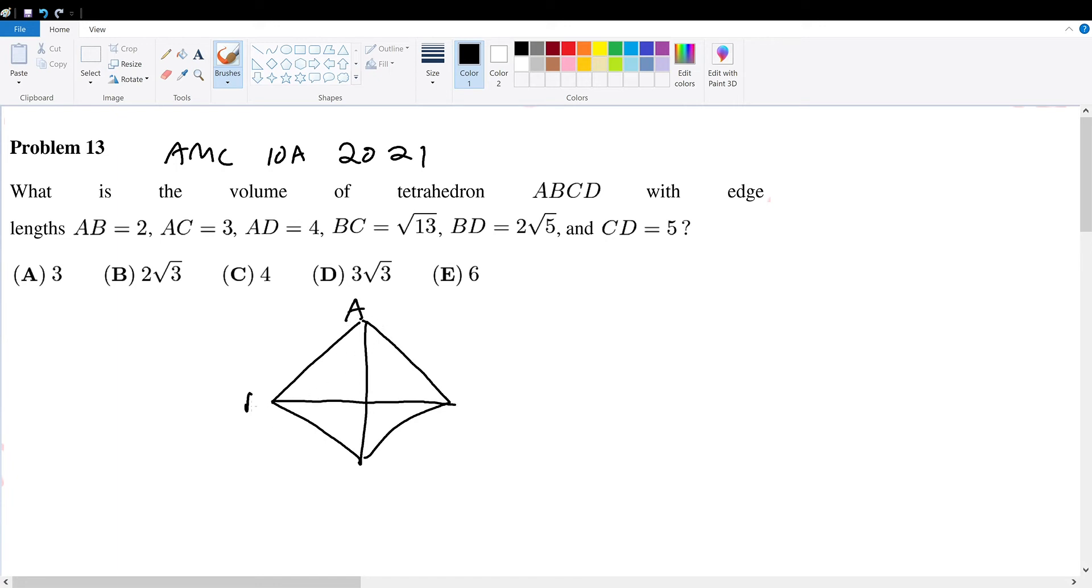First, we're told AB is 2, AC is 3, AD is 4, BC is √13, BD is 2√5, and CD is 5. We're trying to find the volume.